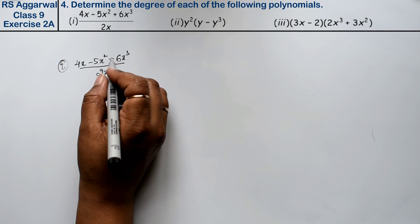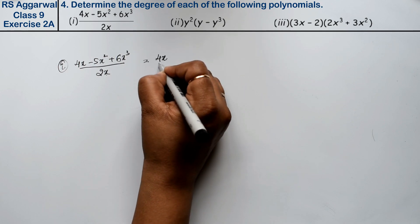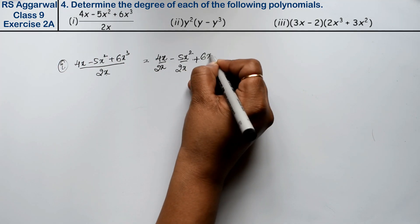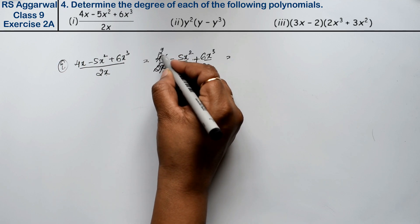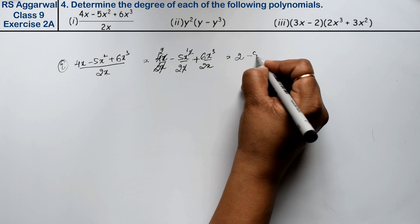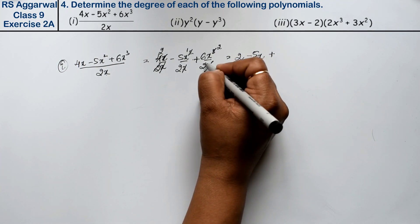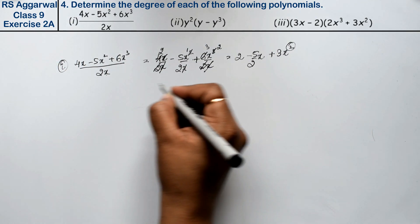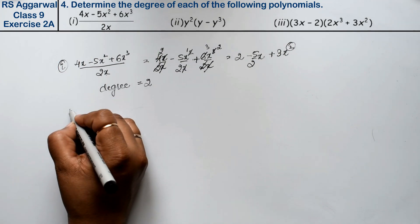We need to solve this first. Since 2x is in the denominator, we split it: (4x upon 2x) minus (5x squared upon 2x) plus (6x cubed upon 2x). The x cancels to give 2, then minus 5/2 x, then x cancels to give 3x squared. So the degree is 2. In the first case, degree is equal to 2.